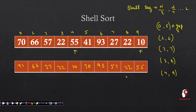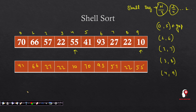After the first iteration, this is the outcome we will get. This was our first iteration in which we took a gap of n/2. Now our next gap will be n/4 - meaning we take half of whatever gap we had before. Half means now instead of gap 4, we will use gap of 2.